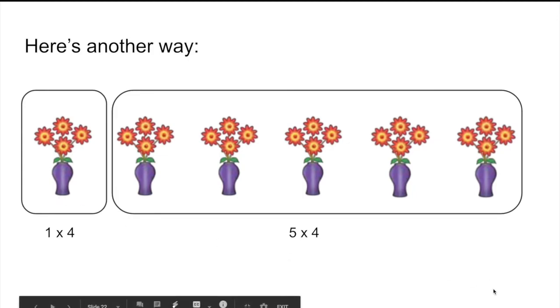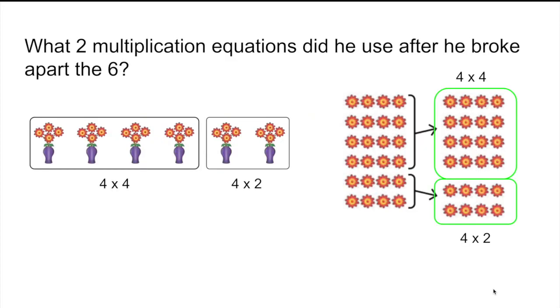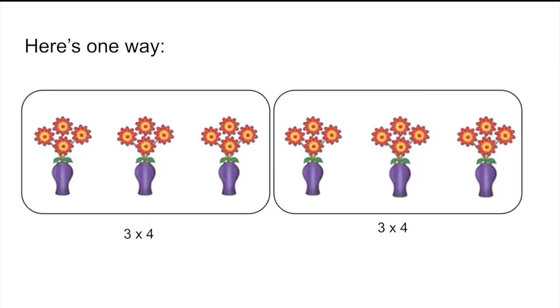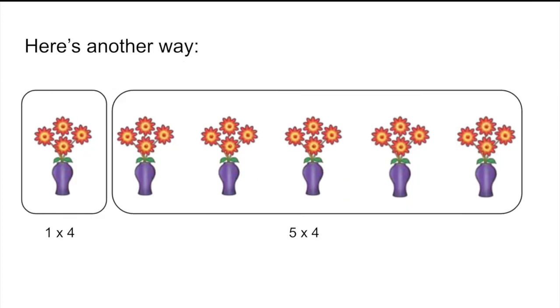Really, whichever way you break it, if you did it like Mario, if you did with threes, a three and a three, or with a one and a five, it doesn't matter because in the end you're going to get the same answer no matter which one you choose. It's just about choosing the one that's friendliest to your brain, the one that uses the equations that you know.